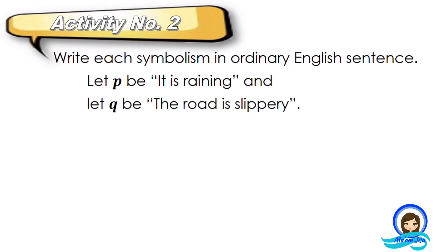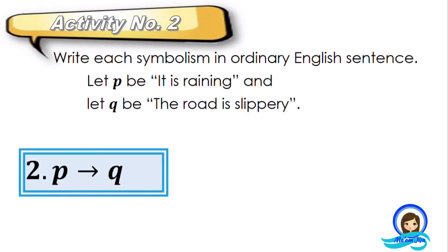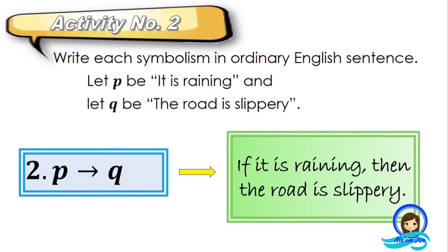For our next example, the arrow symbol means 'if...then' — this is an implication. Therefore, the translation is: if it is raining, then the road is slippery.